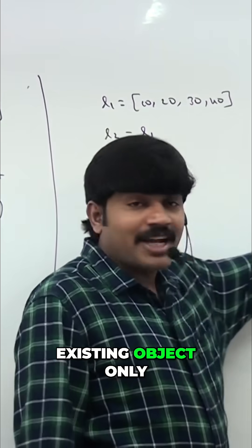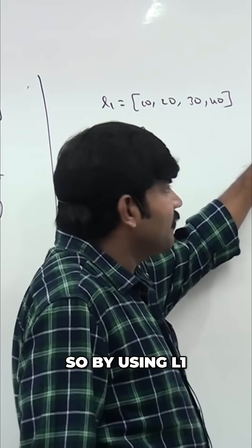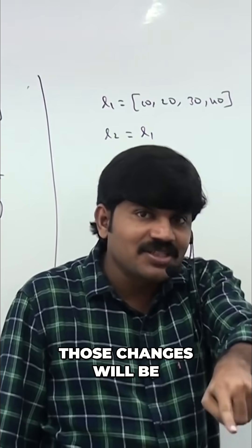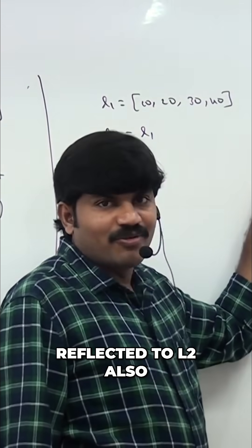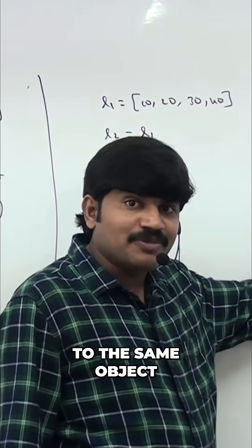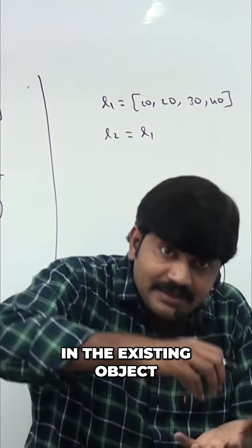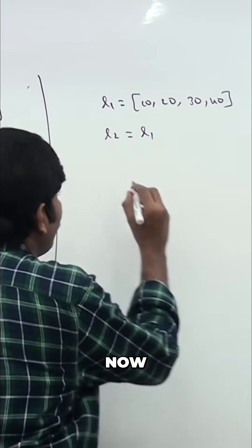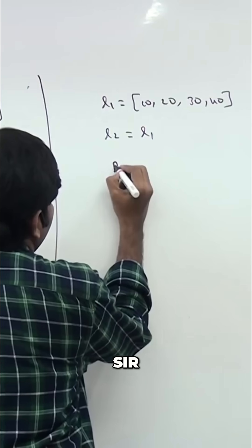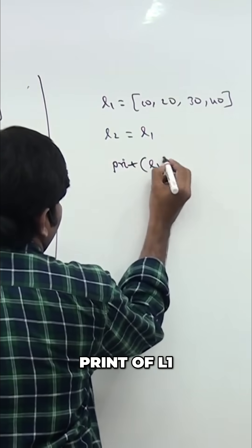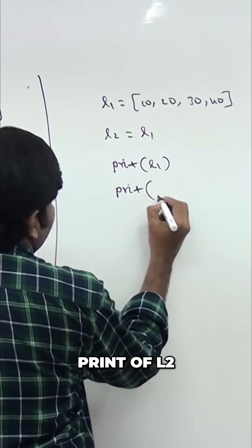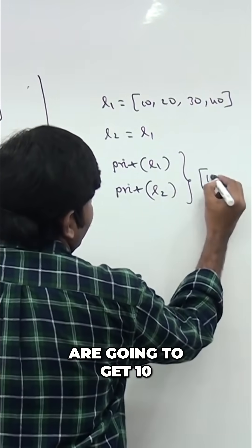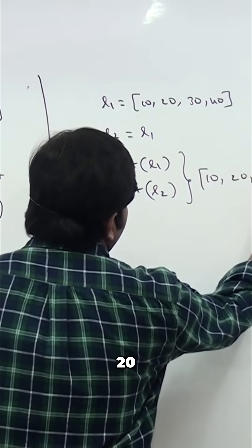If any person tries to change the content, all those changes will be performed in the existing object only. So by using l1 if I perform some change, those changes will be reflected to l2 also, because both are pointed to the same object. Now print l1 and print l2 — in both cases we are going to get 10, 20, 30, 40.